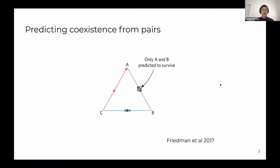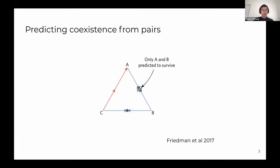Recent interest has been in predicting the coexistence of a species set or community from pairwise competition. Friedman and Gore proposed a simple assembly rule: they competed a set of eight bacterial isolates — all pairs and trios — and found that a trio can coexist only when all of its pairs coexist. For example, in a trio ABC, if A outcompetes C in pairwise competition, then ABC degenerates into AB.